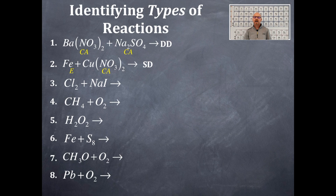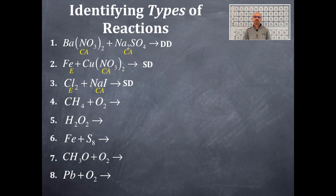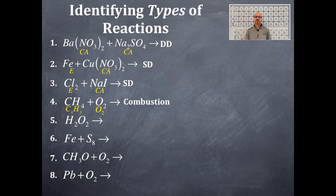Next, we have chlorine and sodium iodide. Chlorine is an element — it is diatomic because it's one of the seven diatomics — and sodium iodide is a California. So that also follows the pattern of a single displacement reaction, except this time the element is a non-metal. That non-metal chlorine is going to displace the iodine, because iodine is acting as an anion. Number four: CₓHᵧ plus molecular oxygen — the carbon and hydrogen ties it all in — so that's a combustion reaction.